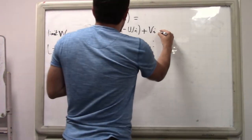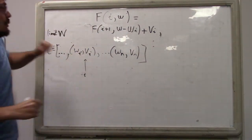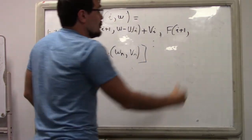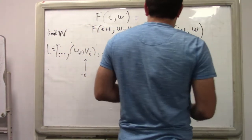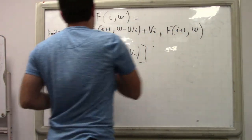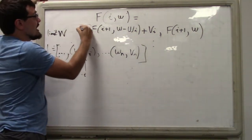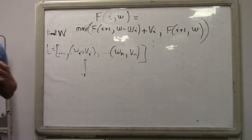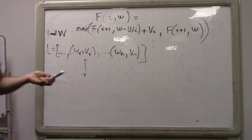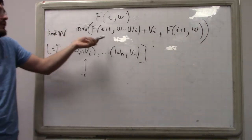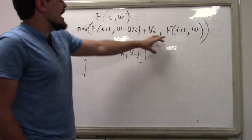If we decline item i, we advance to index i+1 with no change in capacity and no added value. We have two options — take or decline — and we take the max of these two. So: f(i, W) = max(Vi + f(i+1, W - Wi), f(i+1, W)). This recursion is fairly simple: evaluate items one at a time, accept or reject, and pick the better action.